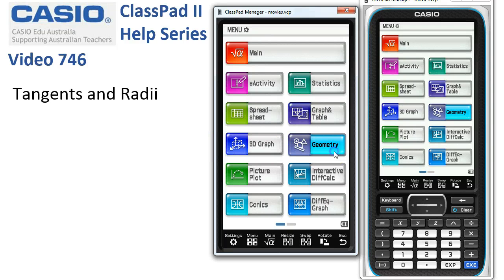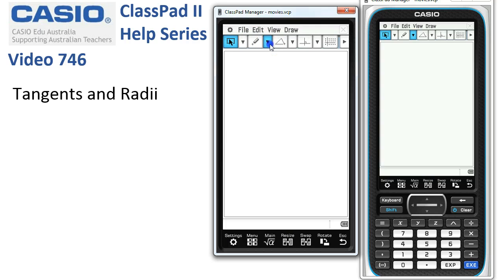Tangents and radii. We'll start in geometry and draw ourselves a circle. Here we go.